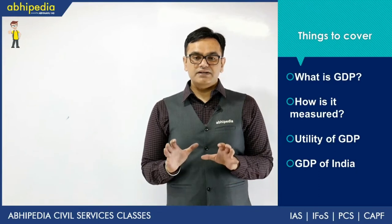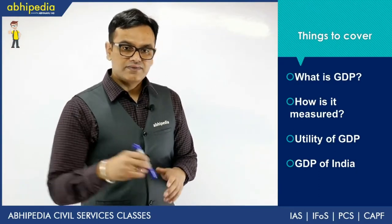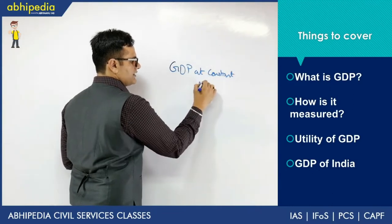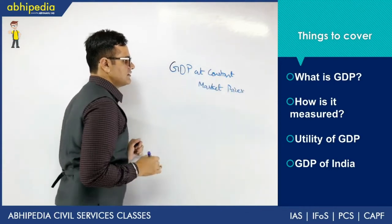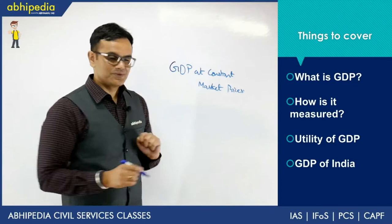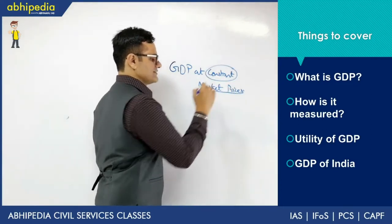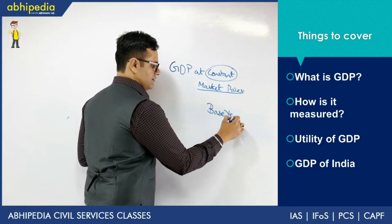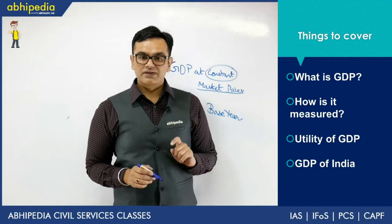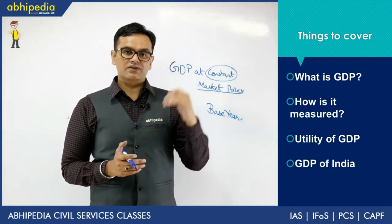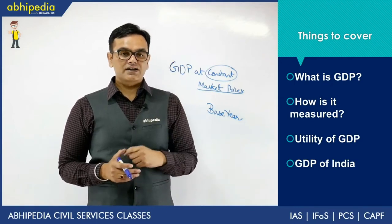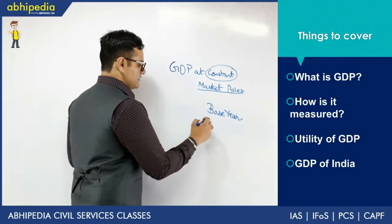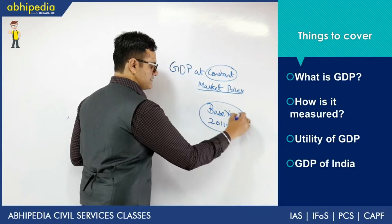Coming back to measurement, NSO publishes GDP at constant market prices. Two key terms here are 'constant' and 'market prices.' Constant prices refers to the base year — when you want to track the money value of goods and services produced in an economy and how it is growing, you need to fix prices. If you don't fix prices, consistent statistical data cannot be built. The current base year is 2011-12 as set by NSO.